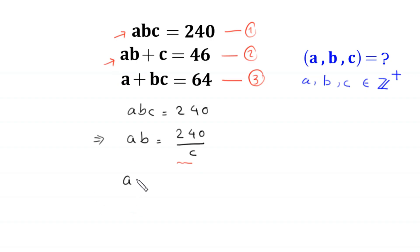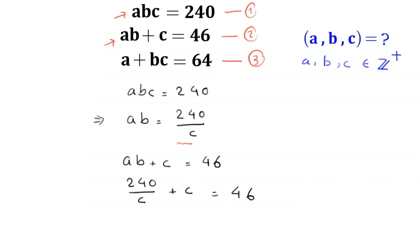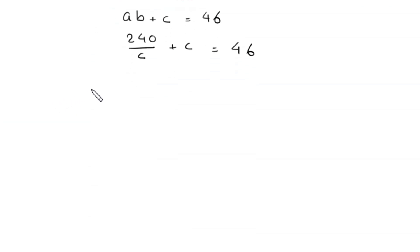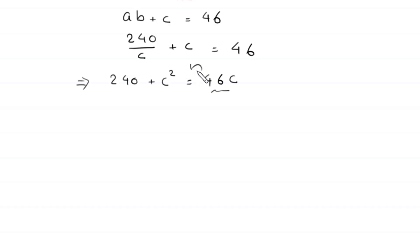Equation 2 is AB plus C is equal to 46. We replace AB with 240 over C: 240 over C plus C is equal to 46. If we multiply both sides by C, this implies that 240 plus C squared is equal to 46 times C. Moving 46C to the left-hand side, this becomes C squared minus 46C plus 240 is equal to 0.